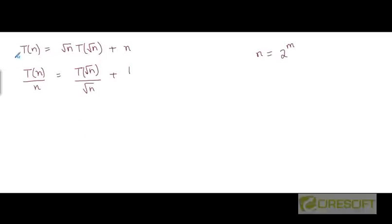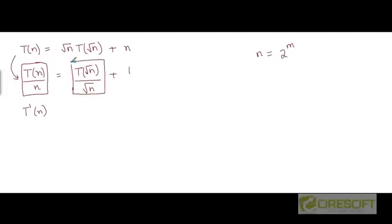Now if you notice this recurrence, you can see there is a pattern to it. If we treat this function as just some function t prime of n, you can see that this function can be written as t prime of the square root of n — we are just replacing n by the square root of n. So if I write t of n over n as t prime of n, then t of the square root of n over the square root of n is t prime of the square root of n, and the plus 1 remains as it is. This is a much simpler recurrence to solve.